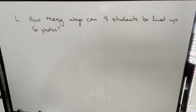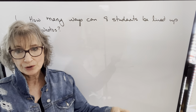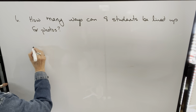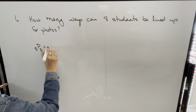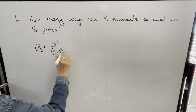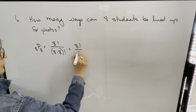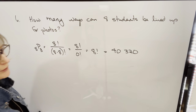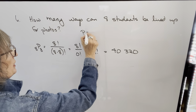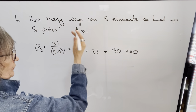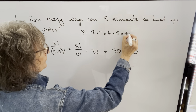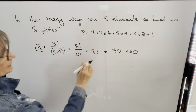The next example says: how many ways can 8 students be lined up for photos? If they're lining up, they're in a certain order, so order is important — this is a permutation. We're lining up 8 out of 8 students, so 8P8 = 8 factorial over 0 factorial = 8 factorial = 40,320. Using multiplication: 8 students for the first position, then 7, then 6, and so on — which is the definition of 8 factorial.